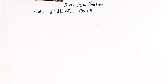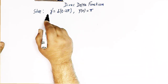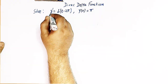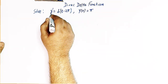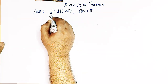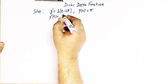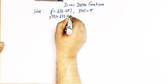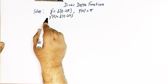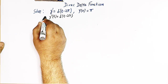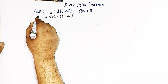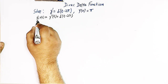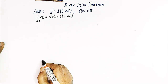We are given y' = δ(t − 2π), which can also be written as y'(t) = δ(t − 2π), with the initial condition y(0) = π. Here y'(t) is the derivative of y(t) with respect to t.